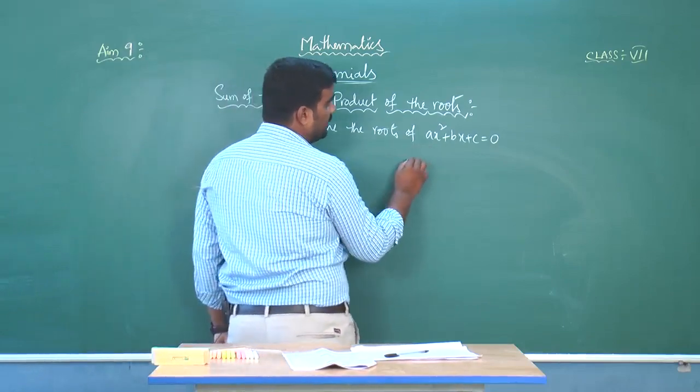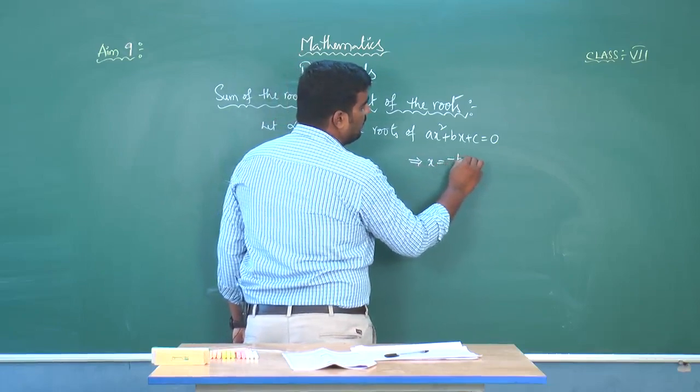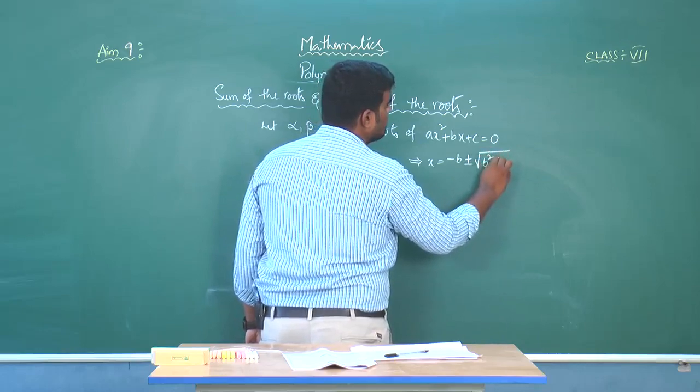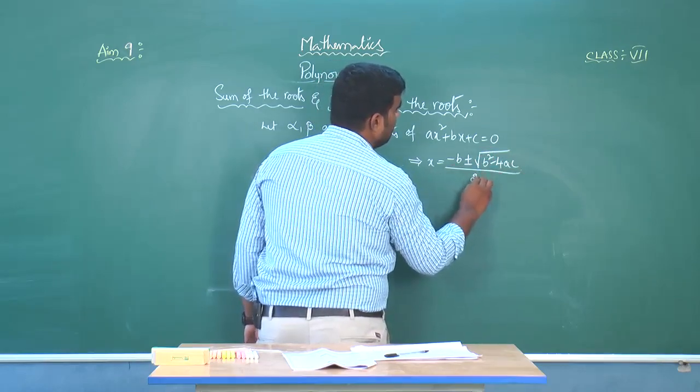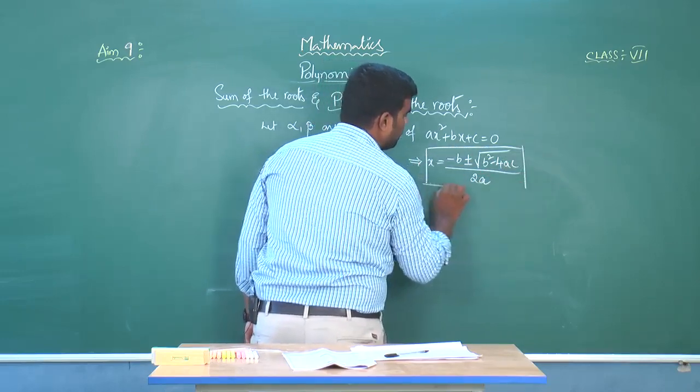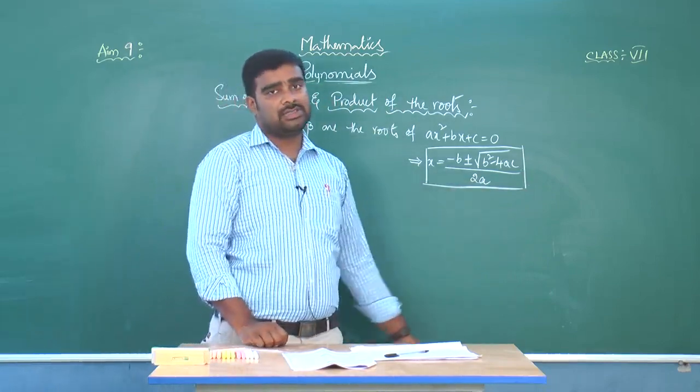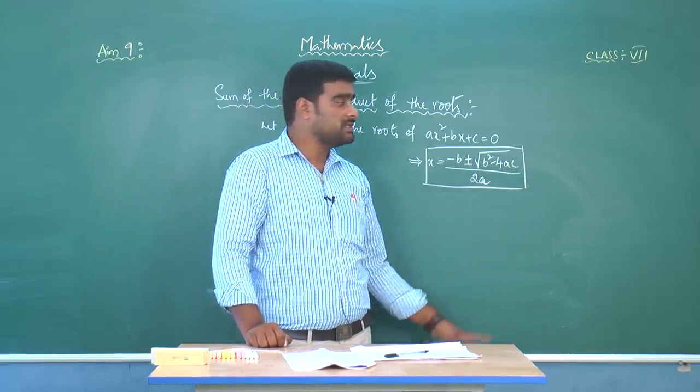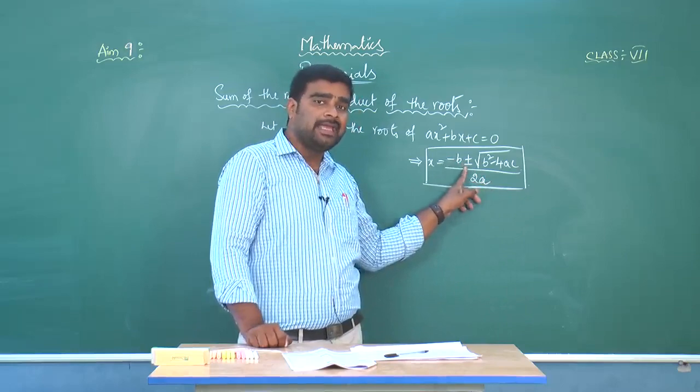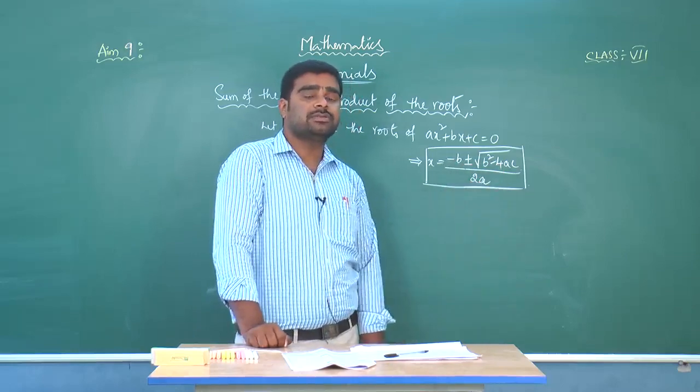Just now, in the previous class, we discussed the value of x using the formula: minus B plus or minus square root of B squared minus 4AC by 2A. That means x will get two values. One is alpha = (minus B plus square root of B squared minus 4AC) by 2A, and another root beta = (minus B minus square root of B squared minus 4AC) by 2A.